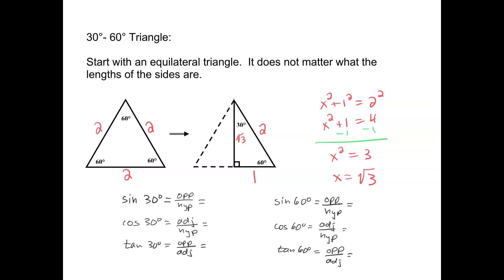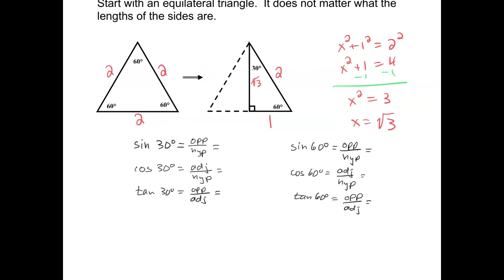Let's look at the trig functions for the 30-degree angle. The sine of 30 degrees is opposite over hypotenuse — opposite is 1, hypotenuse is 2, so it's 1 over 2 or one half. For cosine, that's adjacent over hypotenuse — the adjacent is radical 3 and the hypotenuse is 2, so that's radical 3 over 2. For tangent, that's opposite over adjacent, which is 1 over radical 3. Rationalizing by multiplying by radical 3 over radical 3, I get radical 3 over 3.